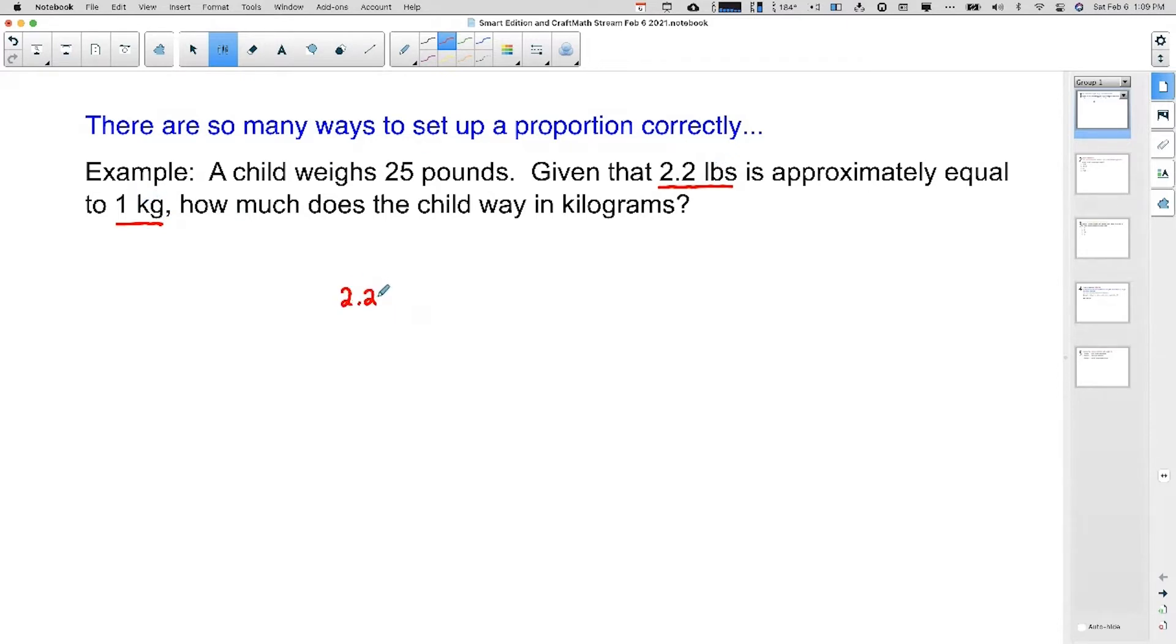What I'm going to do is write 2.2 and put it over one. This is just one way to set up a proportion. I'm going to identify what 2.2 stands for - that's going to be our pounds. And then the one kilogram goes down here at the bottom.